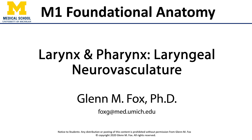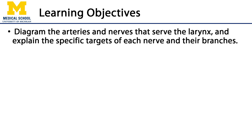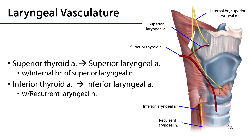Let's discuss the laryngeal neurovasculature. In this video, we'll discuss the arteries and nerves that serve the larynx and explain the specific targets of each nerve and its branches. But let's start with the vasculature. There are two arteries which serve the larynx: the superior laryngeal artery and the inferior laryngeal artery.